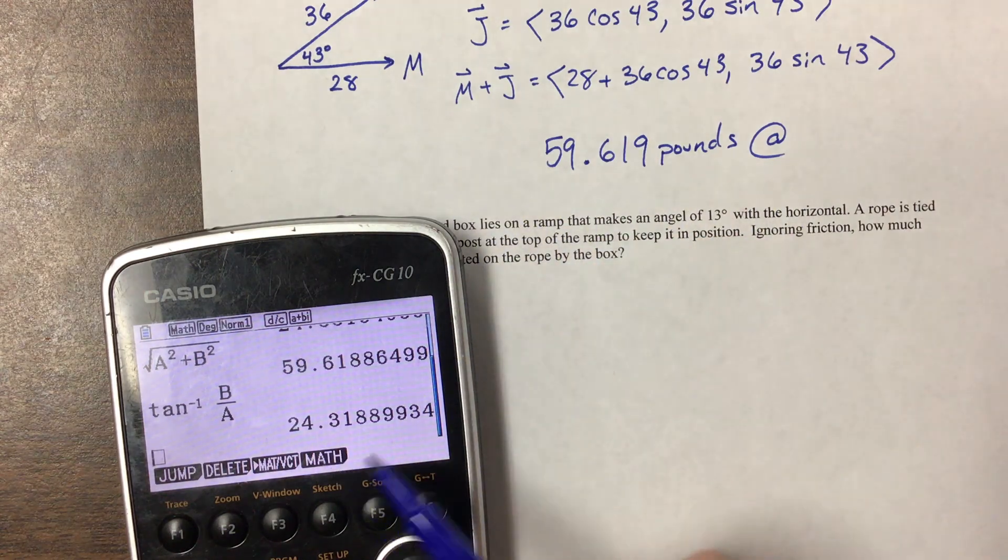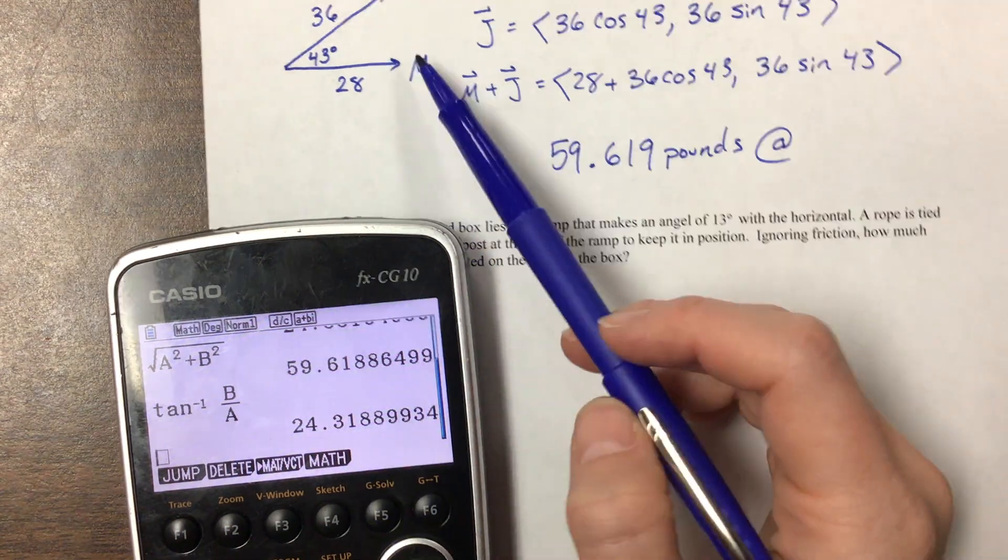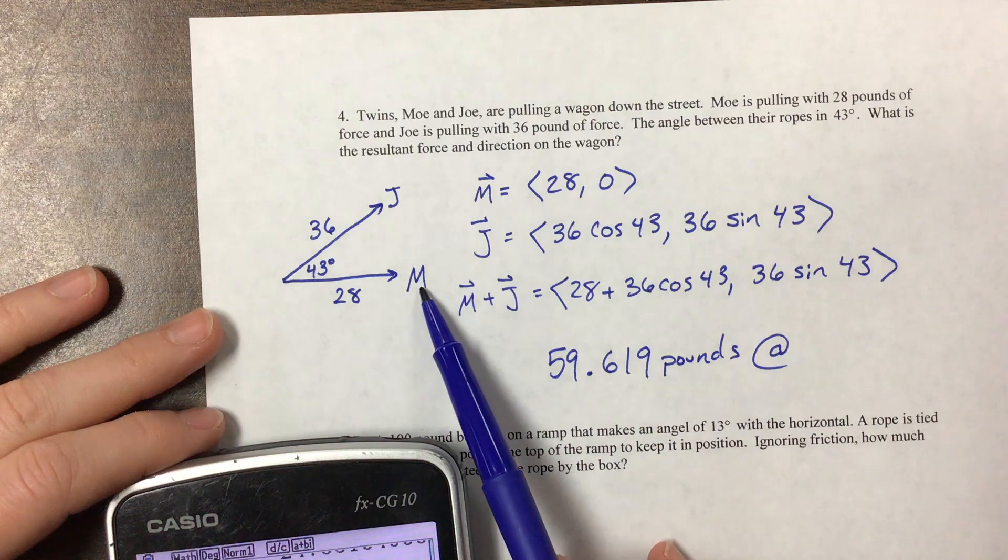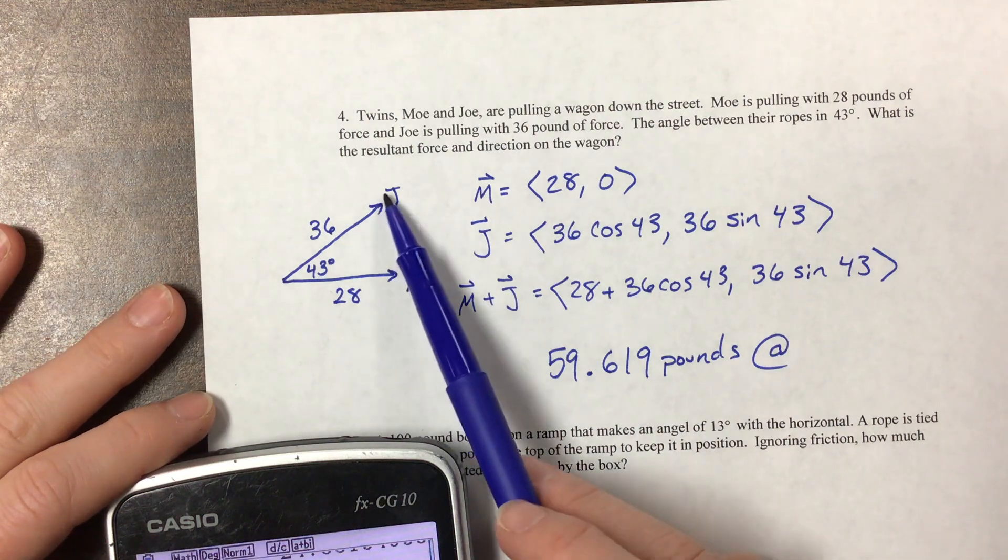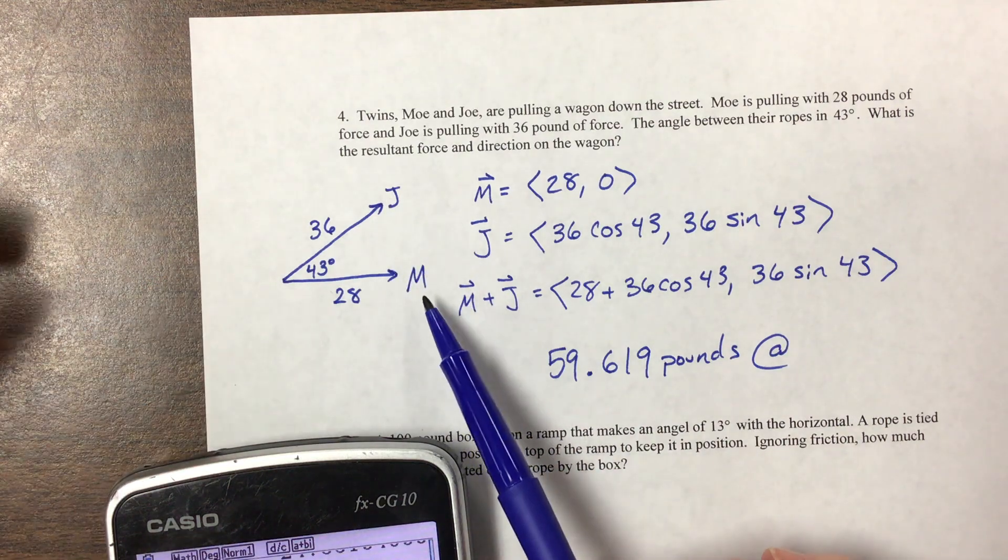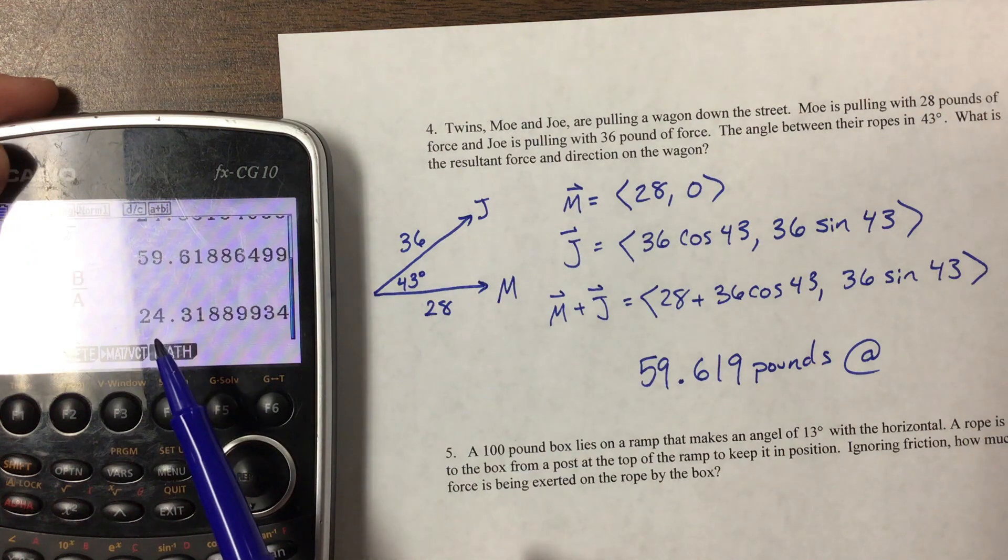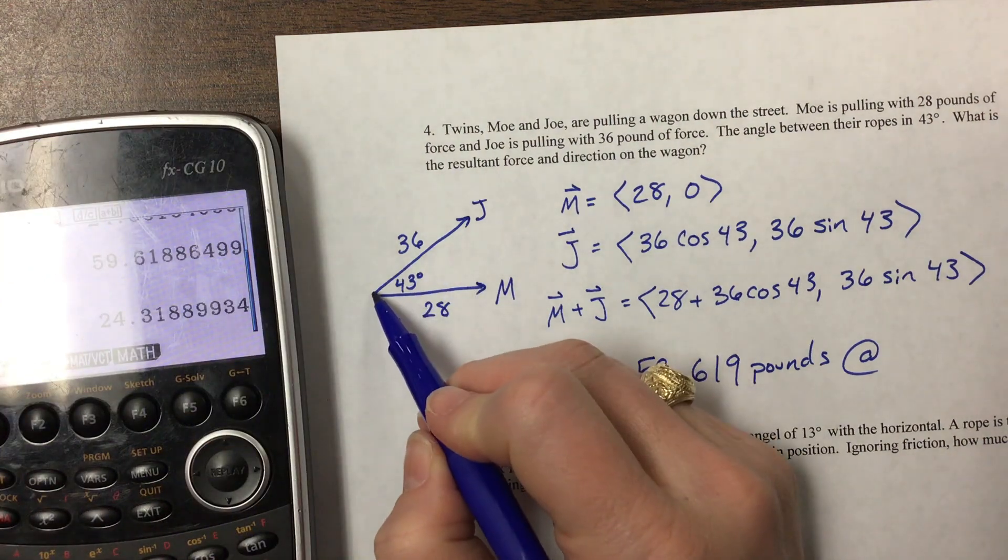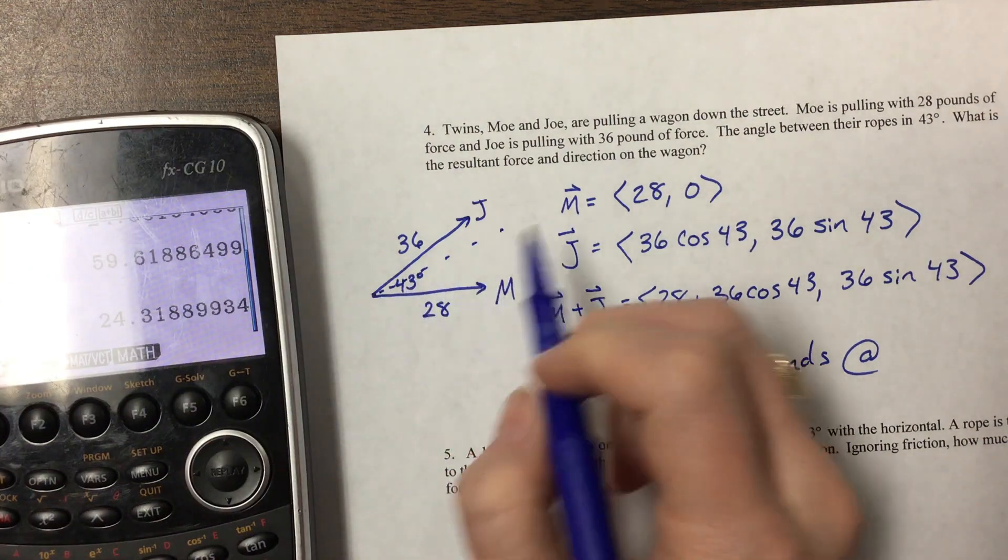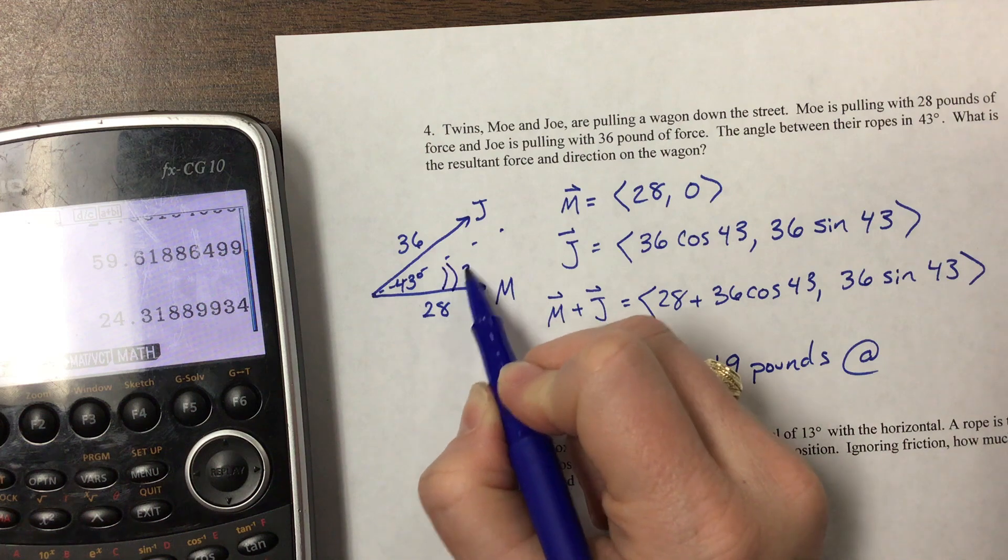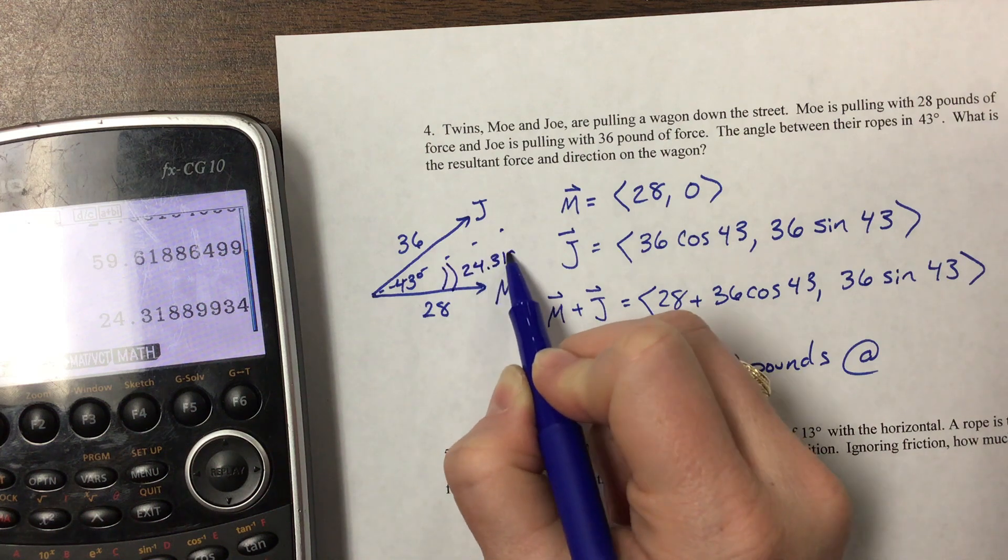Now this one is different because we don't necessarily know who picked to put Moe here and Joe there or the other way around. So what we have here is that we know that the total angle between them is 43. And then we got an answer of 24. Well, that means that this resultant coming through here is 24.319 degrees.